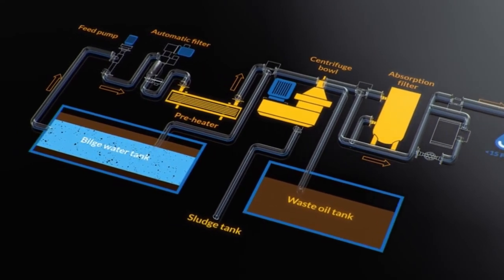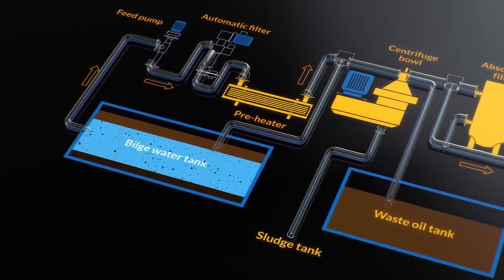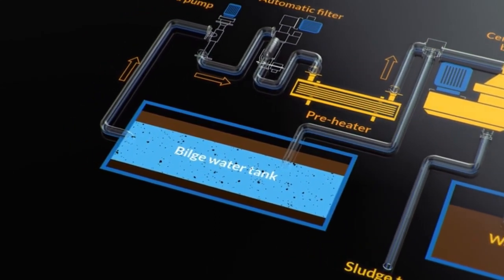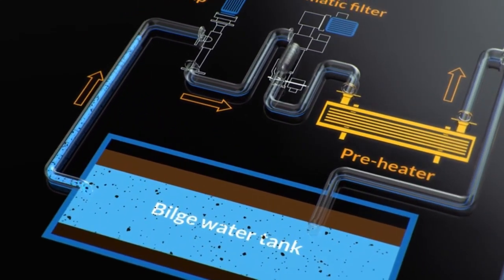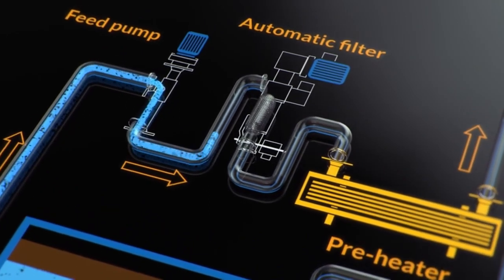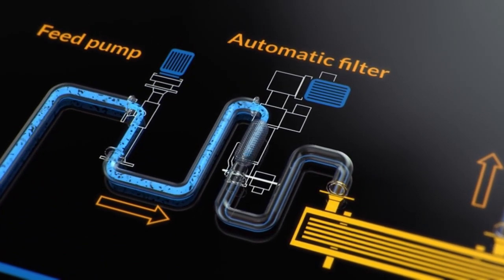The bilge water separation process starts in the bilge tank. A variable rate feed pump supplies bilge water from the bilge tank to the separator via an automatic filter.